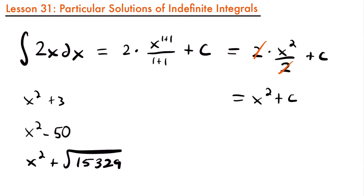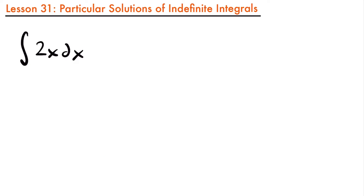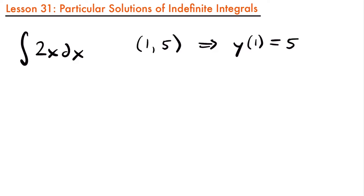But what if we wanted to find a particular solution — a function that has a particular value of c? What if we wanted to find the solution to this integral given that we knew its solution crosses through the point (1, 5)? You could interpret this as: for your answer y evaluated at 1, it's going to be equal to 5. Whatever the solution is to this indefinite integral, we want it to pass through this point.